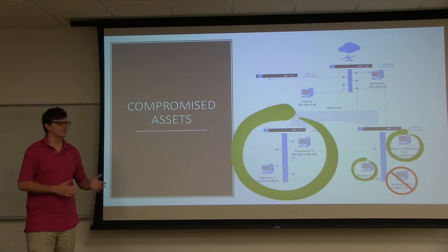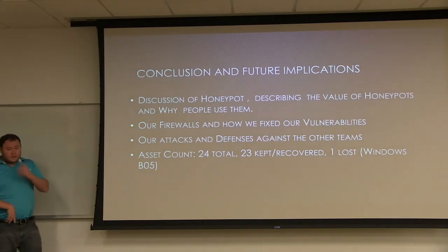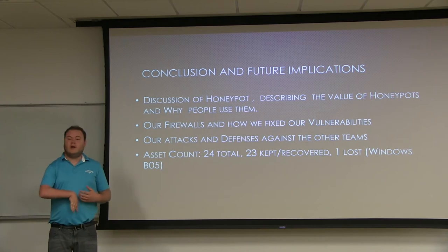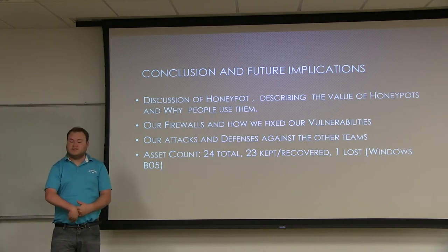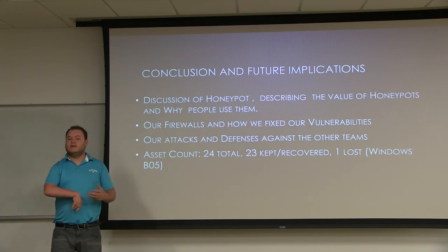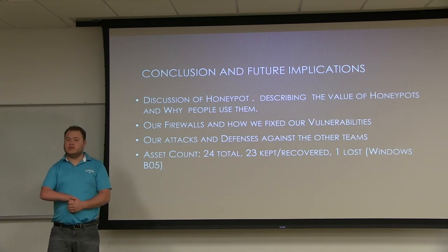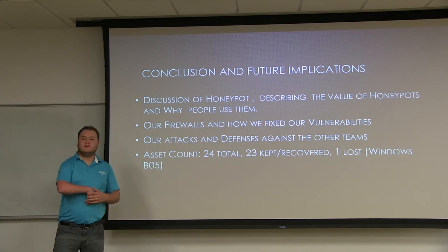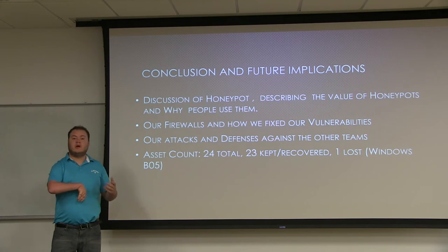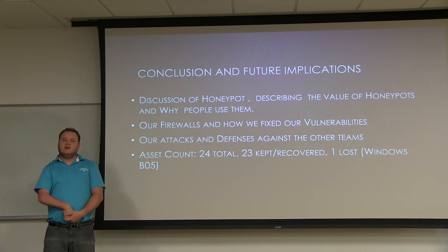Here's a visualization of our compromised assets and the ones we kept or recovered — only one machine was lost in total. To conclude, we discussed the value of honeypots in today's world, our firewall vulnerabilities and fixes including access controls like automatic lockout after 10 minutes, our attacks and defensive maneuvers to regain admin access, and how we used that defensive strategy to gain other teams' machines. Our total asset count includes A03, A04, A05, and C05, with only Windows machine B05 still compromised, giving us around 29 recovered assets.